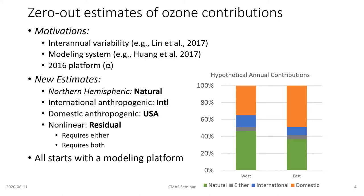When I talk about estimates of non-controllable ozone sources, I'll be talking about natural ozone and international anthropogenic. When thinking about the controllable, I'll call that domestic anthropogenic — or USA for short, meaning United States anthropogenic, not United States of America. So natural is global natural sources, international is the international anthropogenic, and USA is the United States anthropogenic. In addition, there's a residual component from the non-linear system.